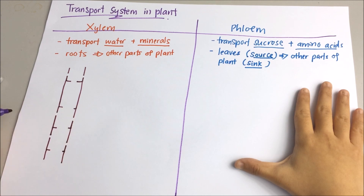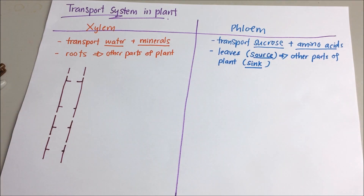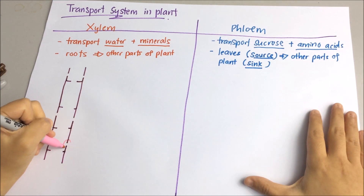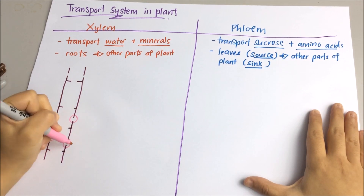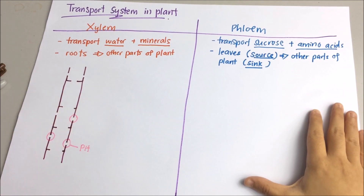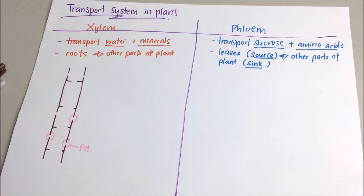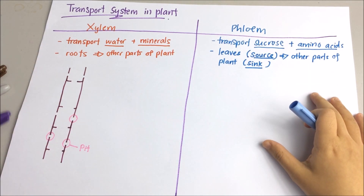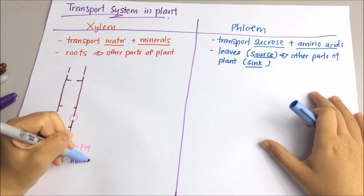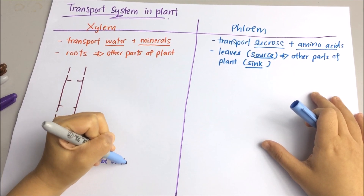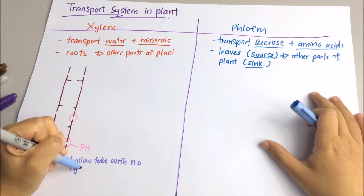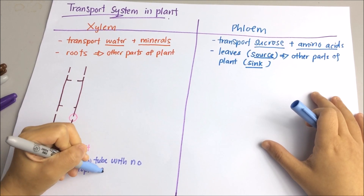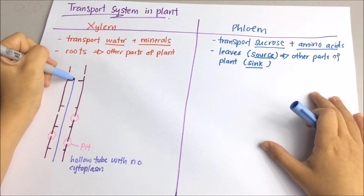The walls of the xylem vessel contain holes known as pits, and these holes allow water to enter through. A mature xylem vessel consists of elongated dead cells arranged end to end to form a hollow and continuous tube for the water column to pass through.